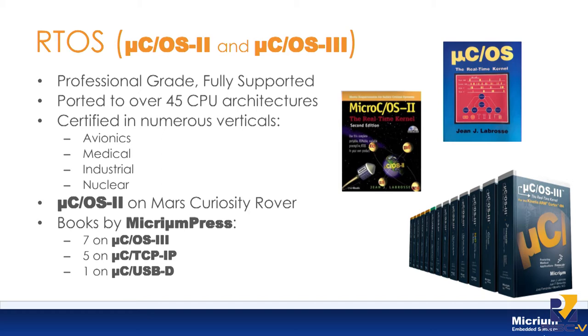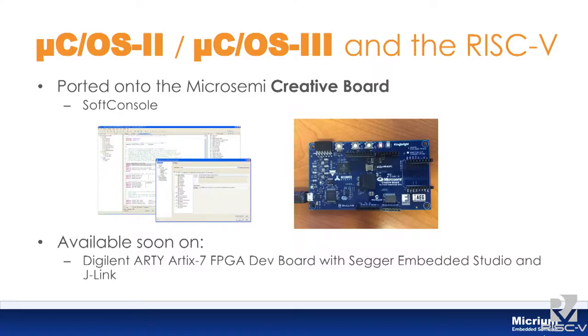MicroC/OS II actually runs on the Mars Curiosity rover. There are seven MicroC/OS III books, each targeting a specific CPU manufacturer — Freescale, ST, and others. We also have five books on TCP/IP and one on USB. We've ported MicroC/OS II and III to the RISC-V architecture, running on the Microsemi Creative board using SoftConsole, and plan to port to other platforms as well.